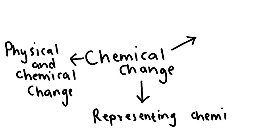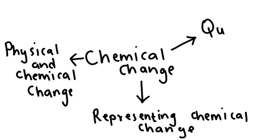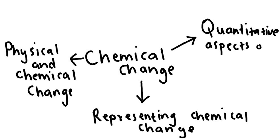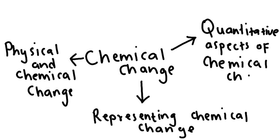The final topic we will cover is calculations involving chemical change. Once we know what physical and chemical change are, and how to represent chemical change, we then learn how to do calculations involving it. You will calculate things such as the number of moles, molarity, concentration, and volume. I wish you all the best in physical sciences for term two.